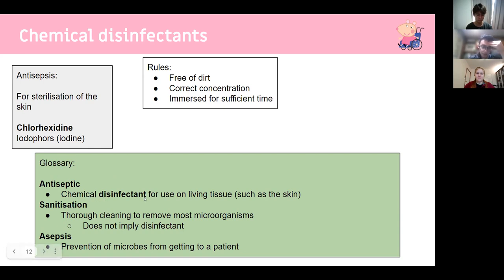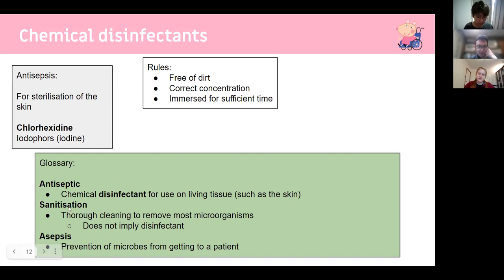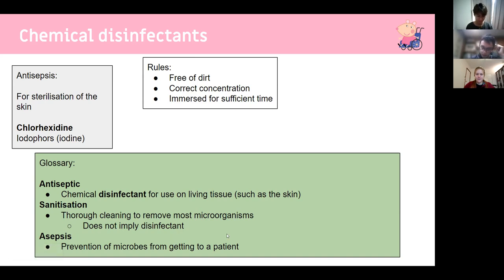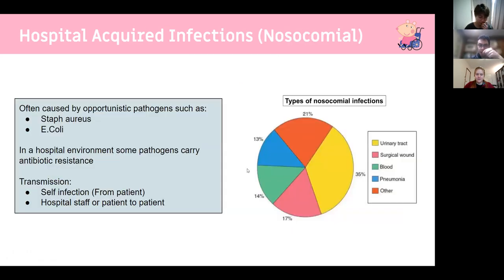Key glossary terms: an antiseptic is a chemical disinfectant for use on living tissues, whereas a disinfectant can be used on living or non-living tissues. Sanitization means thoroughly cleaning to remove most microorganisms — it does not imply disinfection. Asepsis is the attempt to prevent microbes from reaching a patient.